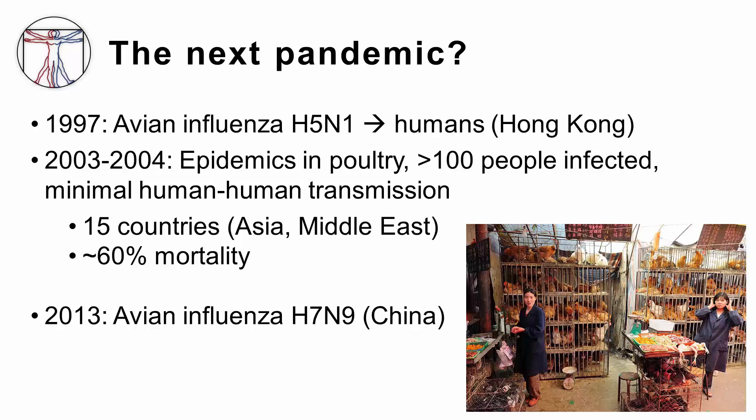In 2013, another so-called avian influenza virus, known as H7N9, emerged in humans in China, causing severe respiratory illness in all patients and death in one-third of those infected. Poultry is again thought to be the source, and so far there are no sustained human-to-human transmissions. However, these cases raise significant concern for an avian-human recombination event, which could lead to the next antigenic shift and influenza pandemic.